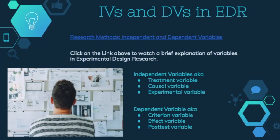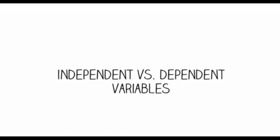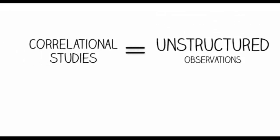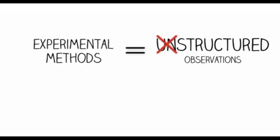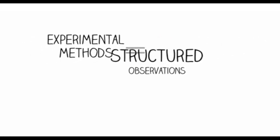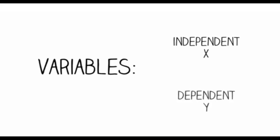Let's take a few minutes to further explore independent and dependent variables. Correlational studies are unstructured observations — you are simply recording what you can observe. Experimental methods require structured observation that results in the manipulation of variables. The term variables simply refers to something that varies. In this case, we need to discriminate between two types of variables: independent and dependent variables.